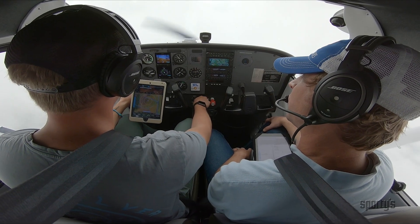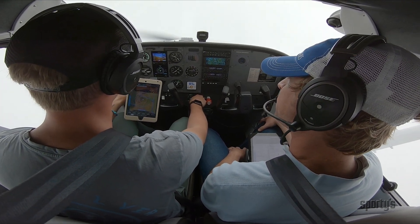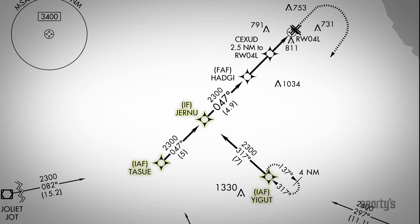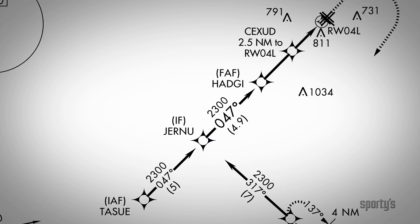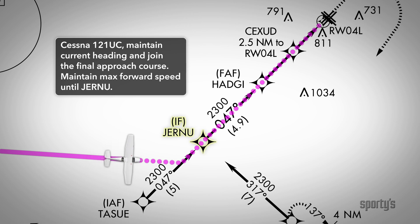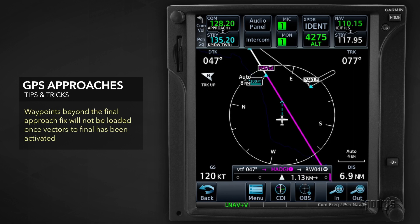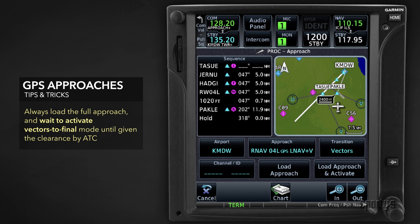While vectors to final is a quick way to activate the approach, be careful with this feature, especially at busy airports. Controllers will sometimes use initial or intermediate fixes for position reports or speed restrictions. For example, at Chicago Midway Airport, if you're being vectored for the RNAV approach to runway four left, you may be asked to maintain a certain speed until Jernu intersection. If you've already loaded vectors to final, that fix won't appear because it's outside the final approach fix, and you'll have to scramble to reload the approach.